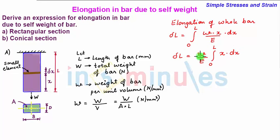Now we see that small w which is weight per unit volume is constant since the area is constant and E is a constant of material. So now upon integrating this term we have delta L is equal to w by E into x square by 2 with limits L and 0.